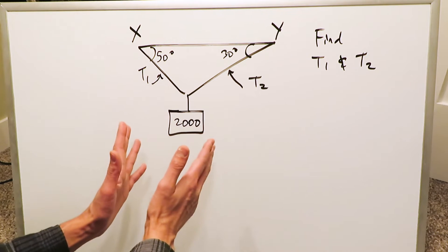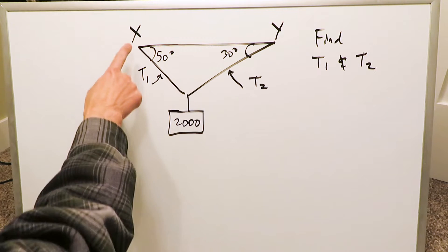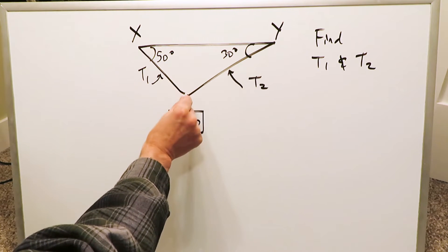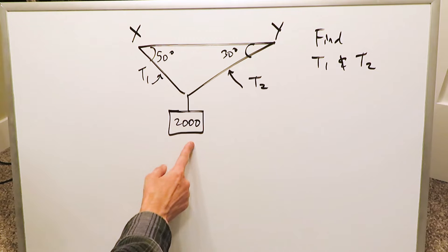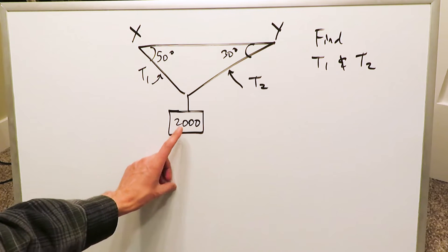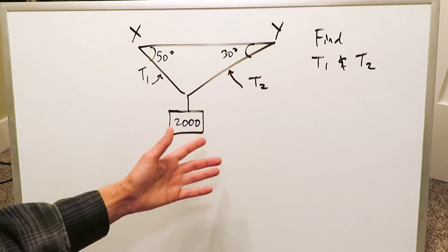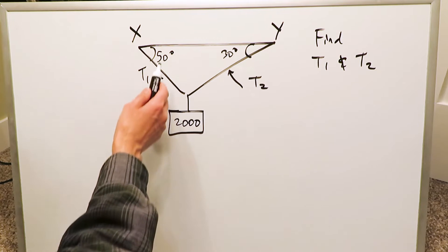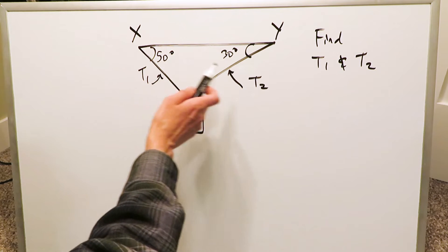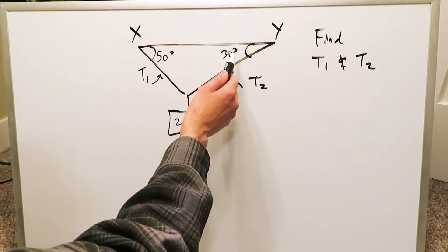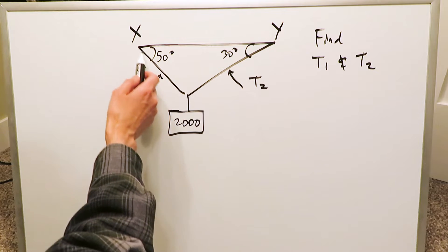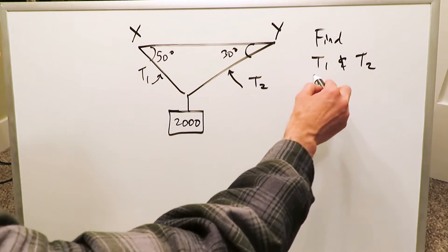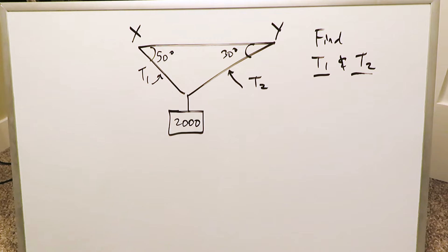Everything is just held in position. You have this specific point x, specific point y, and you have cables running down and holding a certain weight. We have a weight here of 2000 — it could be grams, pounds, or kilograms — and we have an angle of 50 degrees and an angle of 30 degrees. We have to find the tension in cable 1 and tension in cable 2.